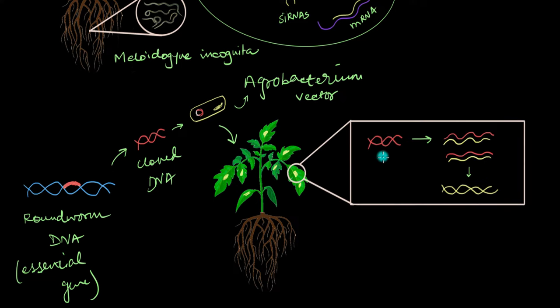Now this cloned gene has double-stranded DNA. Inside the host plant, what will happen is that each of these strands will undergo transcription and give rise to a new strand of mRNA. And since both of these new RNA strands are complementary to one another, they will end up forming a double-stranded RNA. So you see this yellow colored double-stranded thingy, this is the double-stranded RNA.